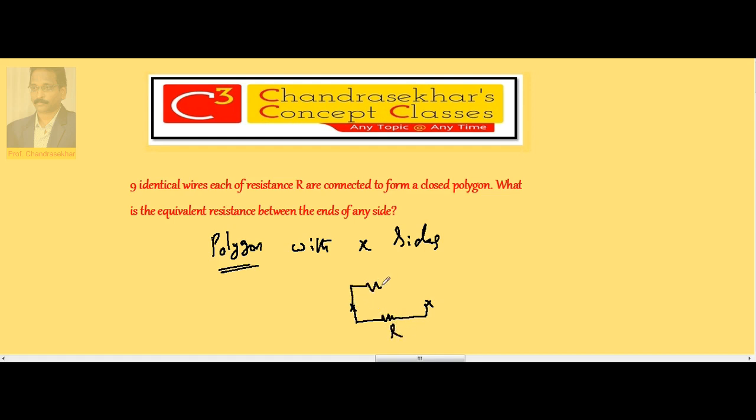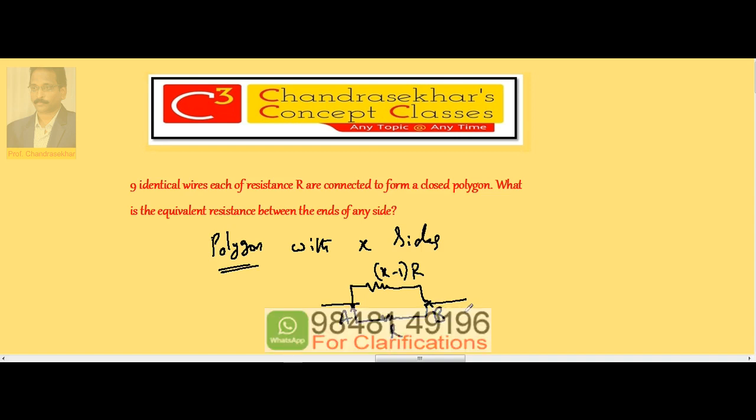If A and B are the two ends of the polygon, one side has resistance R. The remaining side has X minus 1 times R. For example, if I take a polygon with six sides...